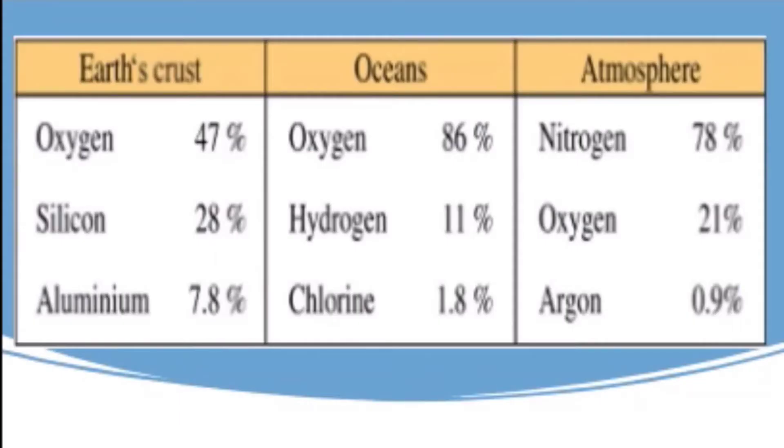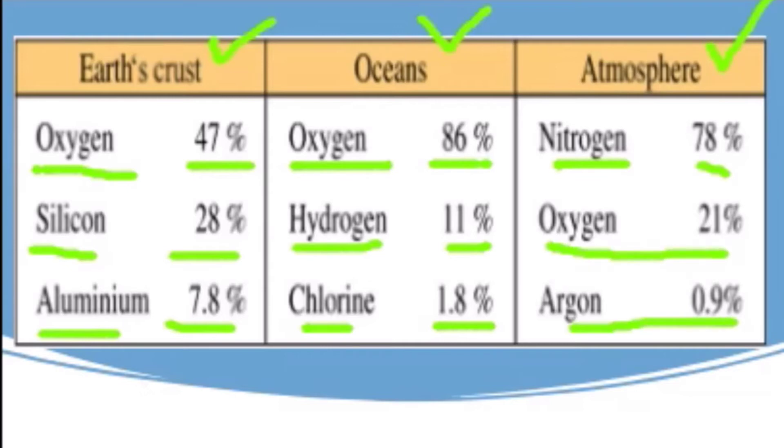MCQs will also ask which elements are found in what percentage. For example, in Earth's crust, oxygen is 47%, silicon is 28%, aluminum is 7.8%. In the oceans, oxygen is 86%, hydrogen is 11%, chlorine is 1.8%. In the atmosphere, nitrogen is 78%, oxygen is 21%, and argon is 0.9%.